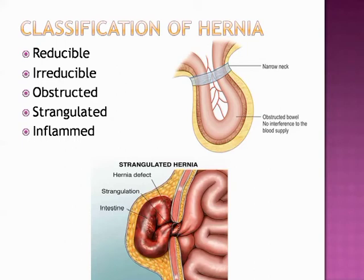In the case of omentocele, the last portion is more difficult to reduce because of adhesions — the fat adheres to the walls of the sac. In a reducible hernia, impulse on coughing is positive. In irreducible hernia, the contents cannot be returned back to the abdomen, but there are no other complications. This is because of adhesions between the sac and its contents, which cause the hernia to become irreducible.